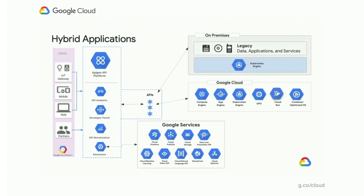The next pattern is hybrid application. You have the legacy service running within your on-premise data center using modern infrastructure such as Kubernetes Engine, and then you combine the experience with Google Cloud technologies such as data loss prevention, cloud storage, artificial intelligence, and machine learning. This gives an enriched experience to your consumer developers and end users — they are not actually aware that they are interacting with a legacy service behind the scenes.